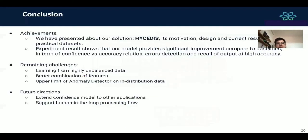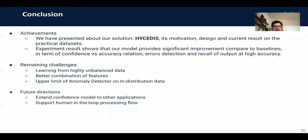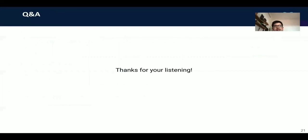In conclusion, we have achieved some accomplishments. First, we have presented our solution, HYCEDIS, its motivation, design, and current results on practical datasets. The experiment results show that our model provides significant improvement compared to baselines in terms of confidence-accuracy relations. However, our work still has remaining challenges. It seems not to work well with learning from highly unbalanced data. Also, the combination of features is one of our challenges. The upper limit of anomaly detection on out-of-distribution data is also a remaining challenge. In future directions, we would like to extend our confidence model to other applications and support human in the loop processing flow. Yeah, that's all of our presentation today. Thank you for your listening. If you have any questions, feel free to contact us. Thank you for listening.